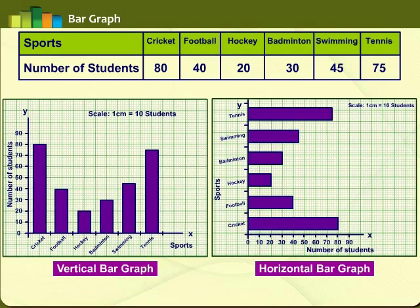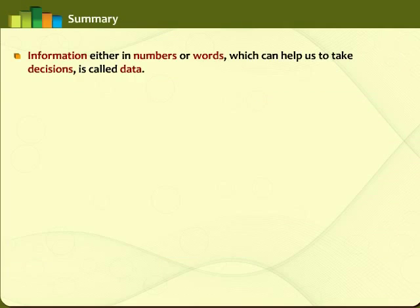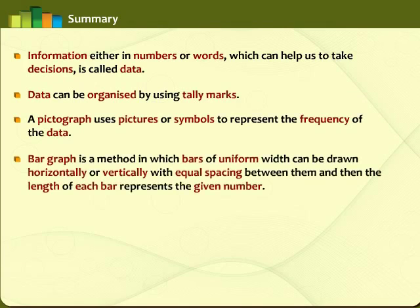Now draw rectangular vertical bars of the same width on the x-axis with the calculated heights on the graph paper. Similarly, we can make a horizontal bar diagram for the same data by changing the markings on both axes and drawing horizontal bars from the y-axis. Let us revise all that we learned in this module on bar graph and pictograph.